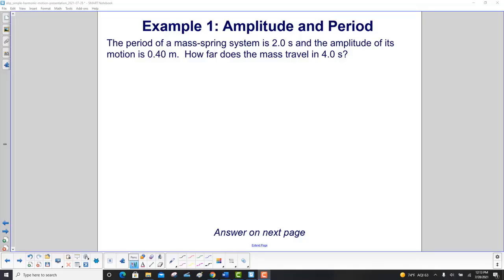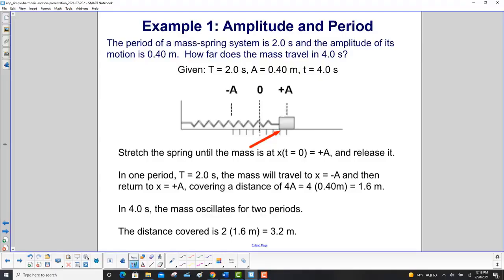The period of a mass spring system is two seconds, and the amplitude of its motion is 0.40 meters. How far does the mass travel in four seconds? We've got the period, two seconds, amplitude is 0.40 meters, and the time is four seconds. We'll sketch this one out.